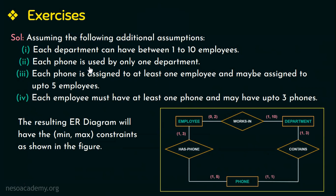We have assumed that each phone is used by only one department — no two departments can share the same phone. So all phones will belong to one or the other department, hence a total participation. Since each phone can be used by only one department, the maximum value is one. Our next assumption is each phone is assigned to at least one employee and may be assigned to up to five employees, so all phones are assigned to one or the other employee — total participation, maximum five. Therefore the min-max constraint of the phone entity type in the relationship has-phone is (1, 5).